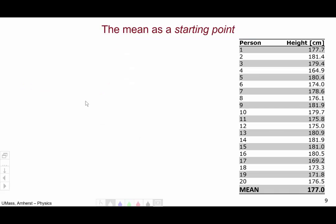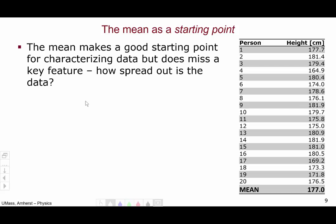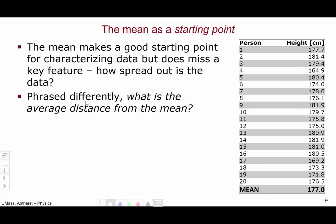The mean provides a great starting point for characterizing data, but it's insufficient because it's missing a key feature. Just representing the mean gives us no clue on how spread out these data are. Phrased differently, we don't have any information on what is the average distance for a random data point to the mean. So if we're looking at this question, let's try to translate this question into mathematics.